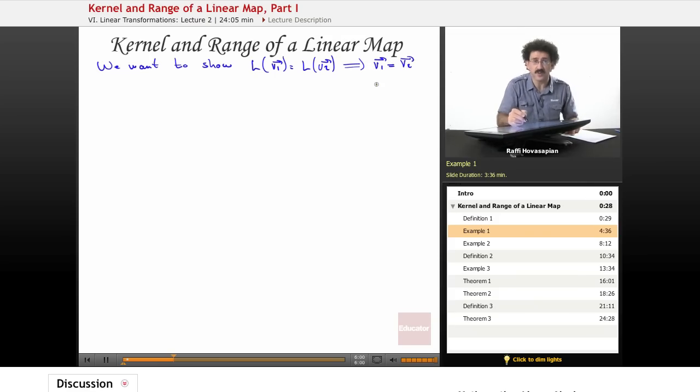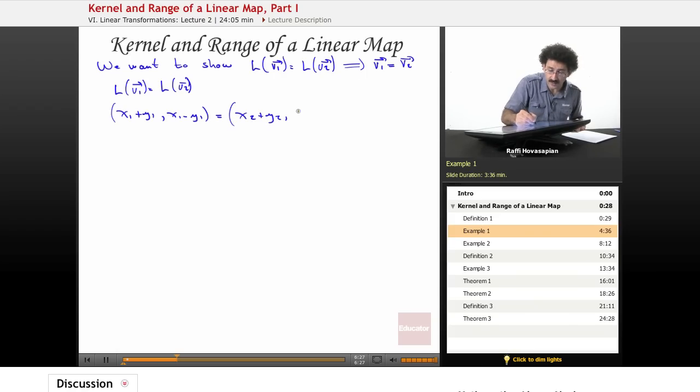So let's let this be true, so L(V1) equals L(V2). That means (x1+y1, x1-y1) is equal to L(V2), which is (x2+y2, x2-y2). Well, these are equal to each other, that means I get this equation: x1+y1 equals x2+y2, and from the second part, these are equal.